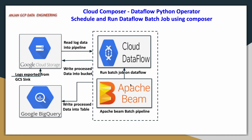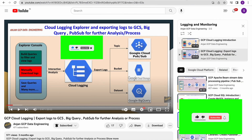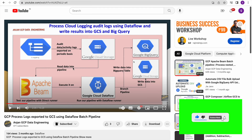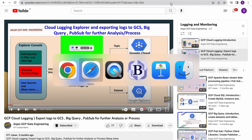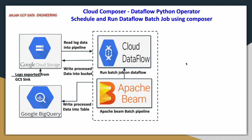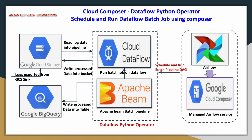I've already done a demo on the Apache Beam batch pipeline and will share that code in the video description. In this demo, I'm mainly focusing on how to schedule and run a Google Cloud Dataflow batch job using Composer. Specifically, we are using the DataflowPythonOperator — an inbuilt Airflow operator — to run our Cloud Dataflow batch job.